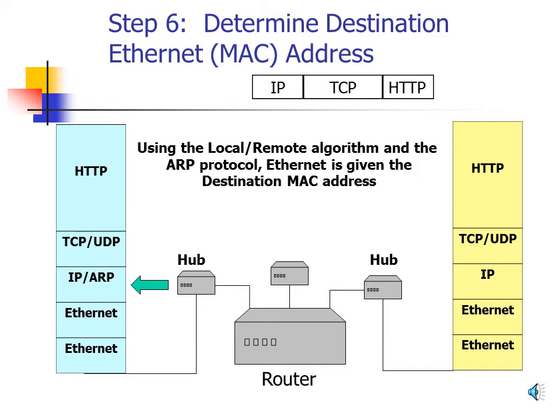Step 6: Determine the Destination Ethernet (MAC) Address. Inside the IP header is the destination IP address, but we also need to add an Ethernet or MAC address. The Address Resolution Protocol (ARP) uses a local-or-remote algorithm and a special ARP packet to determine the destination MAC address. Because the destination computer is remote — on the other side of the router — ARP retrieves the MAC address of the router, and the Ethernet packet is addressed to the router. Once the destination MAC address is determined, Ethernet is given both the MAC address and the complete packet.